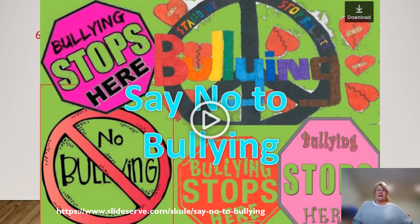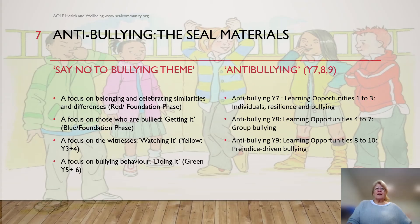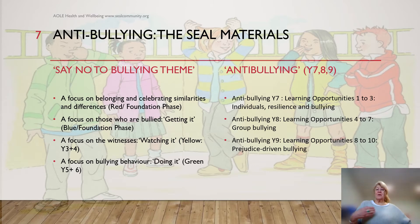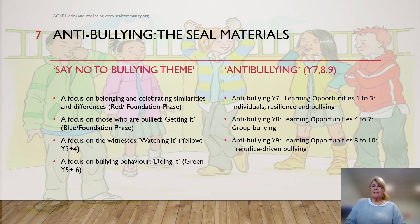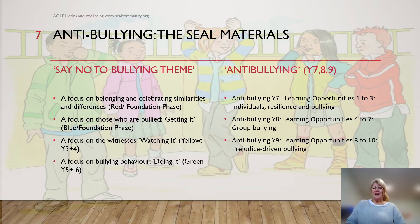There are both primary and secondary anti-bullying materials. The primary one is called 'Say No to Bullying.' Within the materials, different aspects and perspectives on bullying are addressed at different ages, with the same kind of structured nature of learning opportunities, building on what's been done the previous year. Throughout all year groups, for all ages, there's a focus on respectful relationships and valuing diversity — because if we don't have that as a starting point, any attempts to deal with bullying behaviours are fairly fruitless.